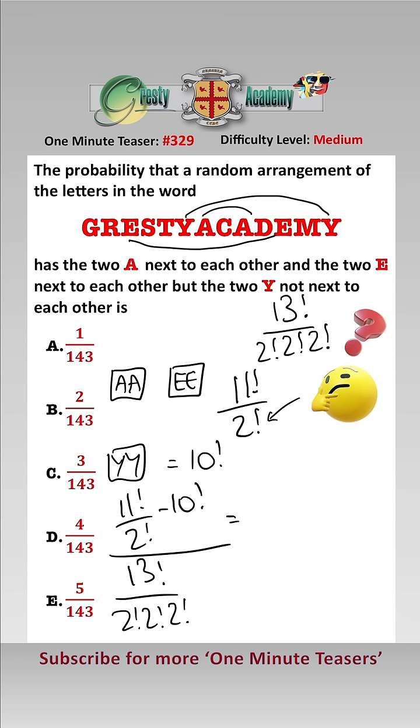And that simplifies to 9 over 2 times 10 factorial over 13 factorial over 8, and that simplifies to 36 over 11 times 12 times 13.